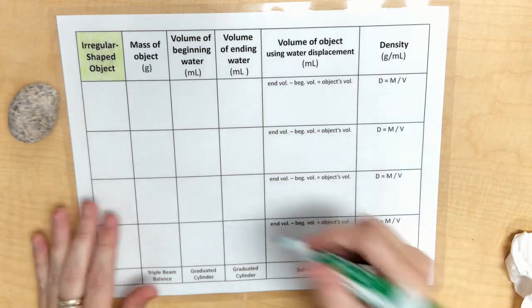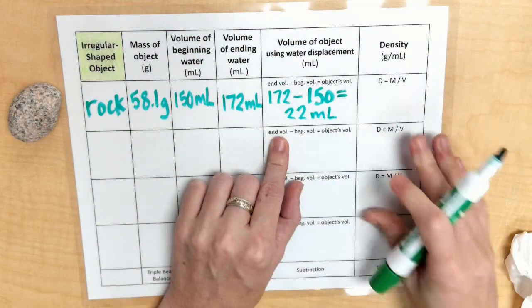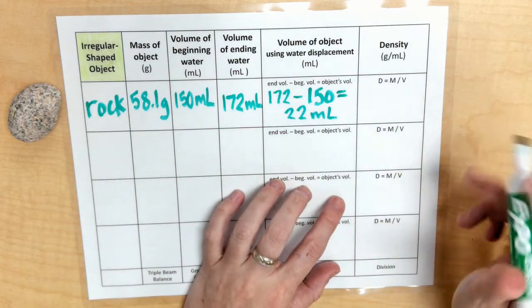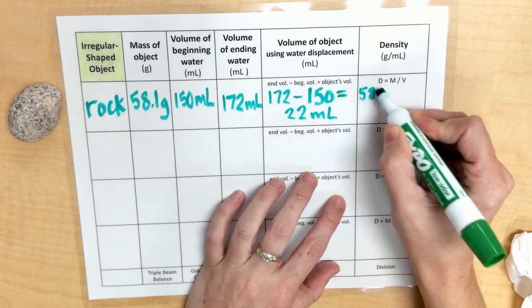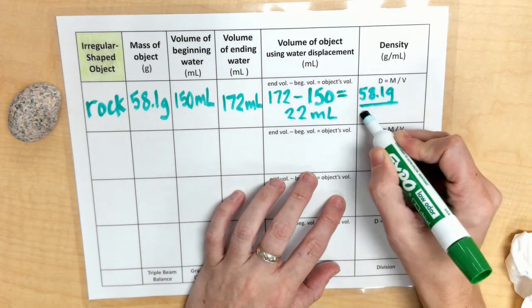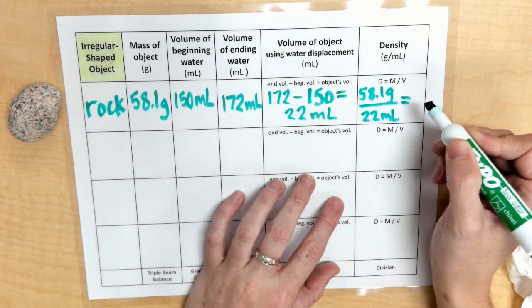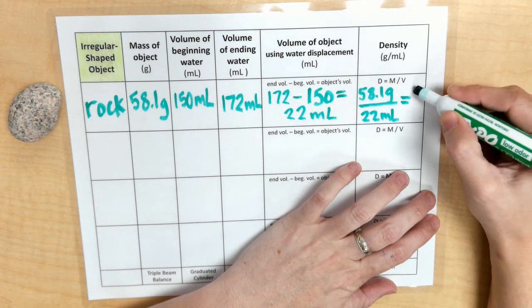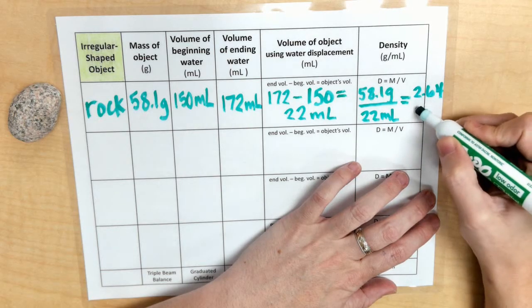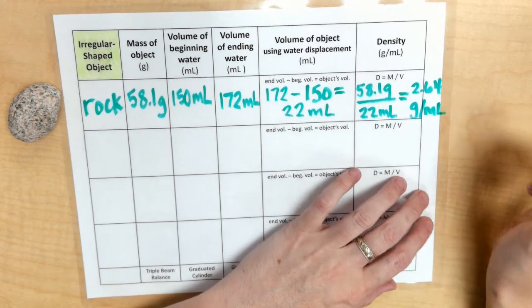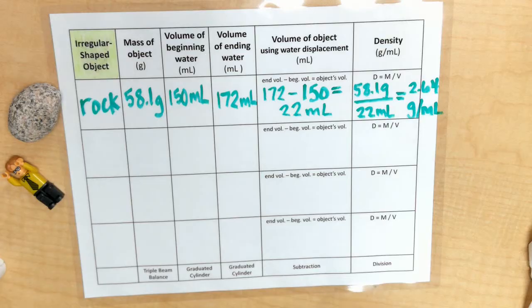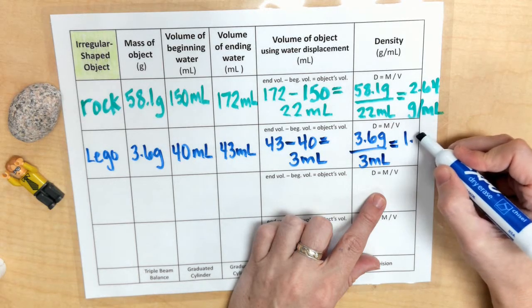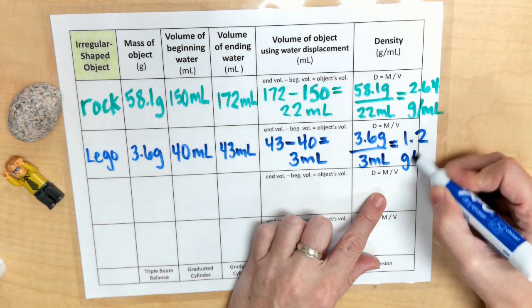All right, so for my rock, we're able to plug in our mass and our volume into our formula. So it would look like 58.1 grams over 22 milliliters. We would do some handy dandy calculations and that would lead us to know that the density is 2.64 grams per milliliter. And with our Lego Dwight piece over here, you know that the density of my Lego piece comes out to 1.2 grams per milliliter.